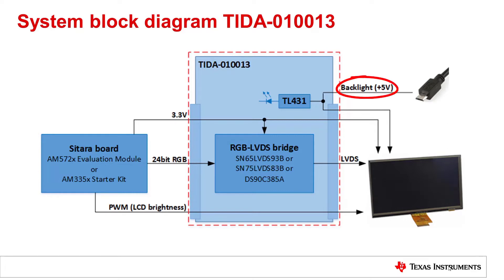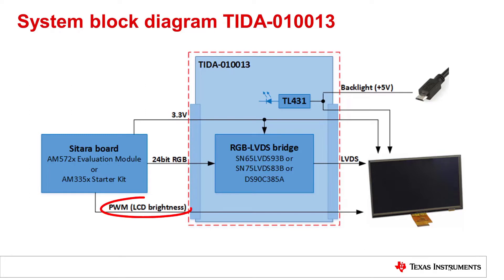The backlight is provided by an external power supply and monitored by the TL431. The power supply for the RGB bridge and for the digital part of the LCD is provided by the Sitara board. The Sitara board also provides a PWM signal to directly control the brightness of the LCD.